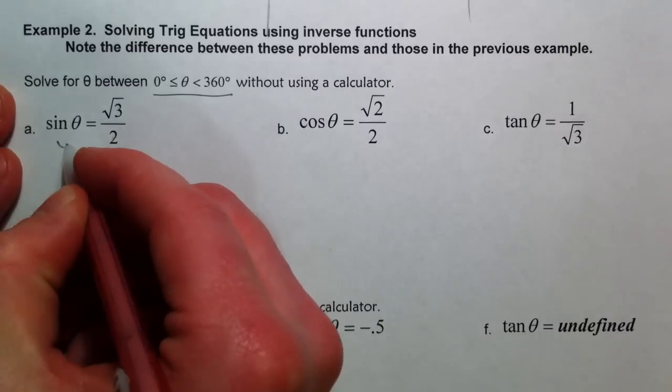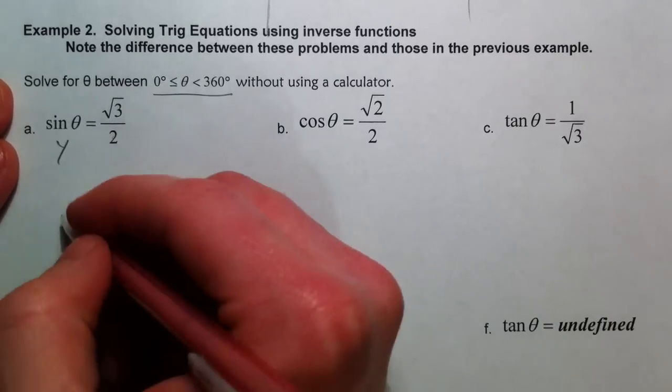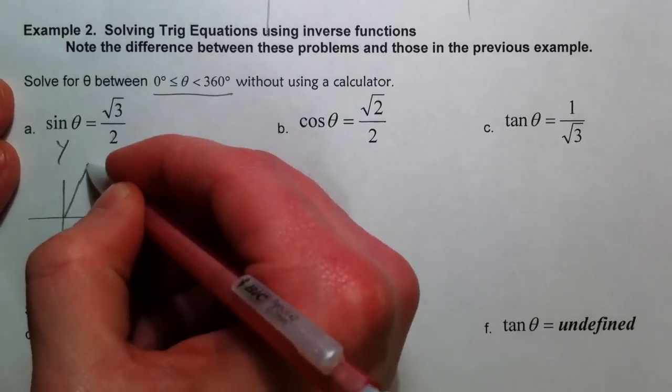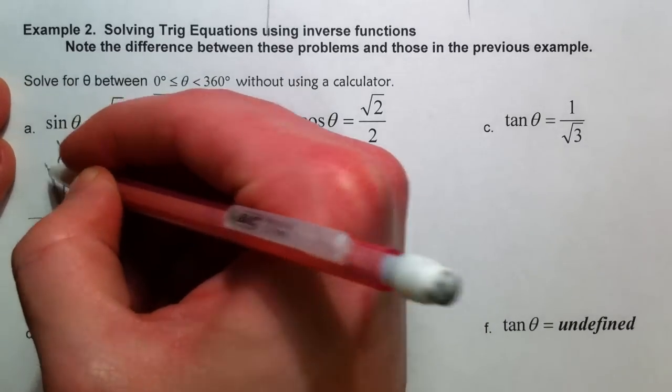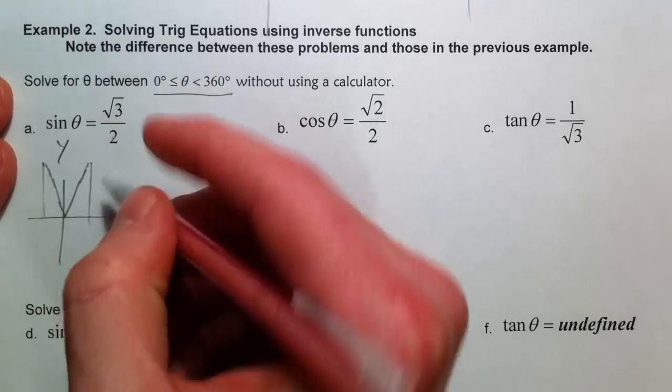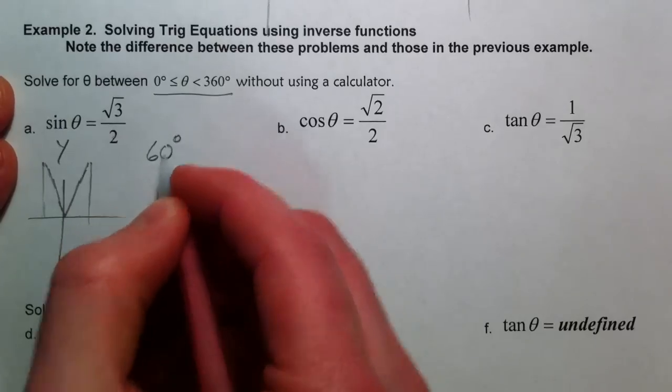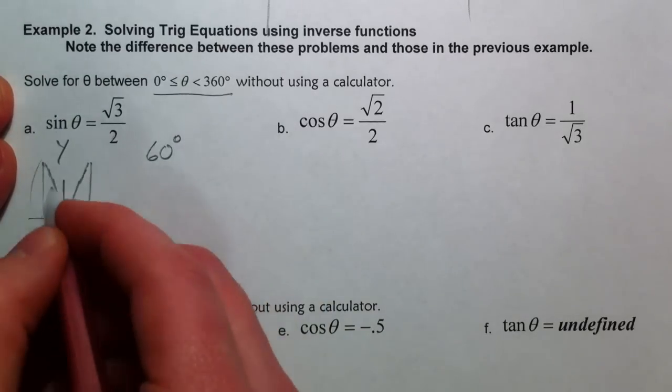So where are the y values equal to root 3 over 2? Where the y values are the big ones on the 30-60-90, and so I draw my 30-60-90 and I want my y's to be the big ones. So at 60 degrees and this one's 120.